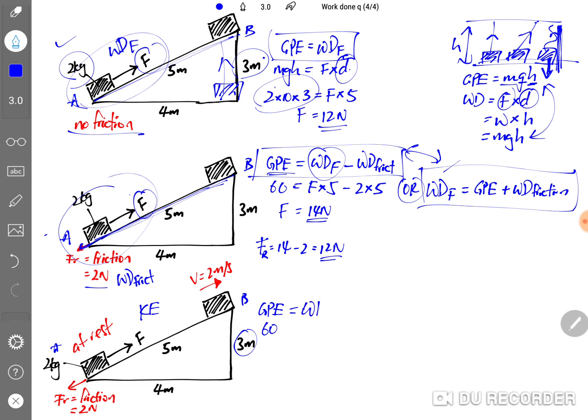And it all starts from the work done by the pulling force minus away work done by the friction and minus away the gain in the KE. So this will be force times 5 minus away 2 times 5 and minus away ½MV² where the mass is 2 and the speed is given in the question, 2 meters per second squared. And if you solve this, this will be 14.8 newtons.